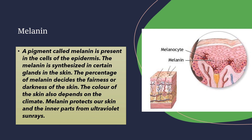A pigment called melanin is present in the cells of the epidermis — the epidermis is the outermost layer of the skin. Melanin is synthesized in certain glands in the skin. The percentage of melanin decides the fairness or darkness of the skin — higher melanin means darker skin, and lower melanin means fairer skin.